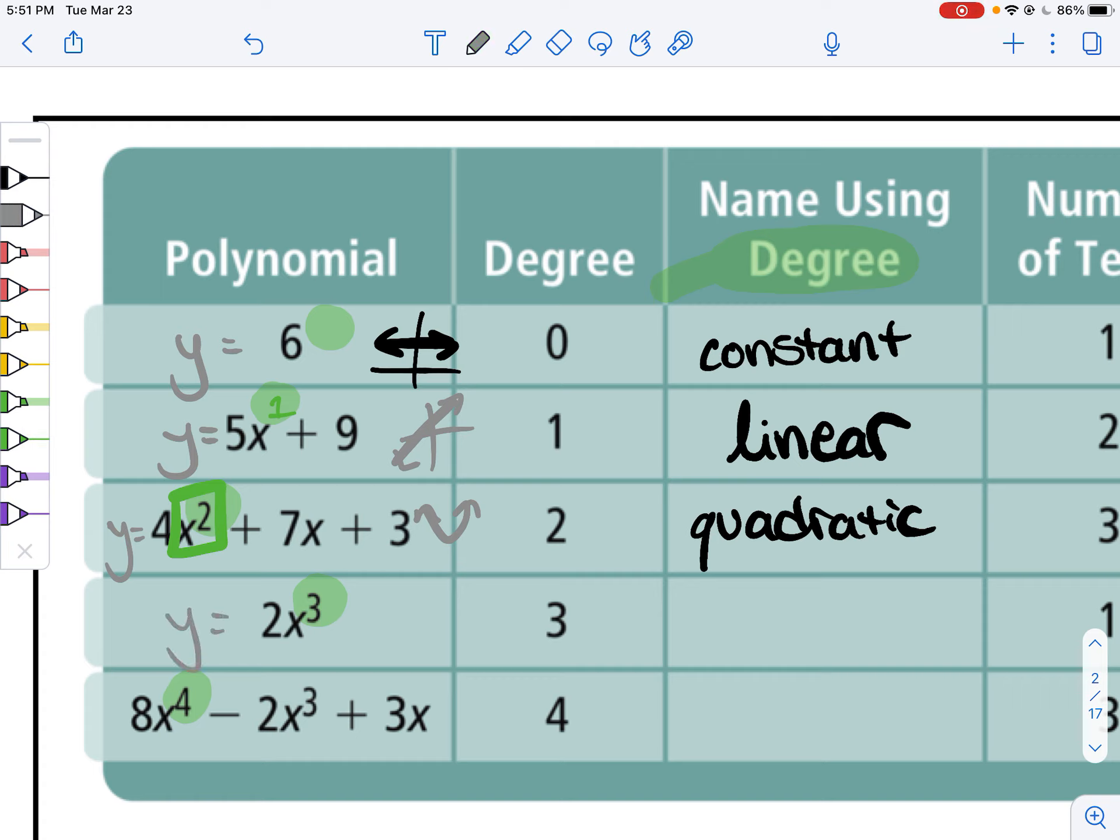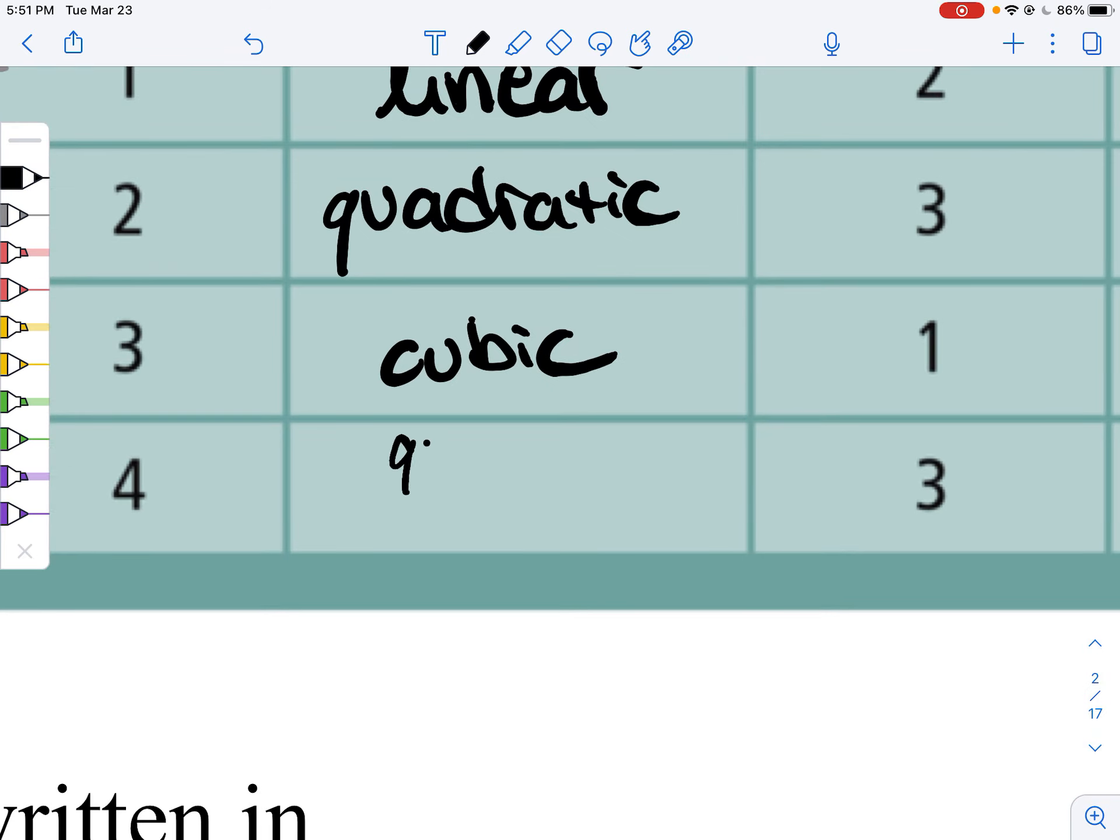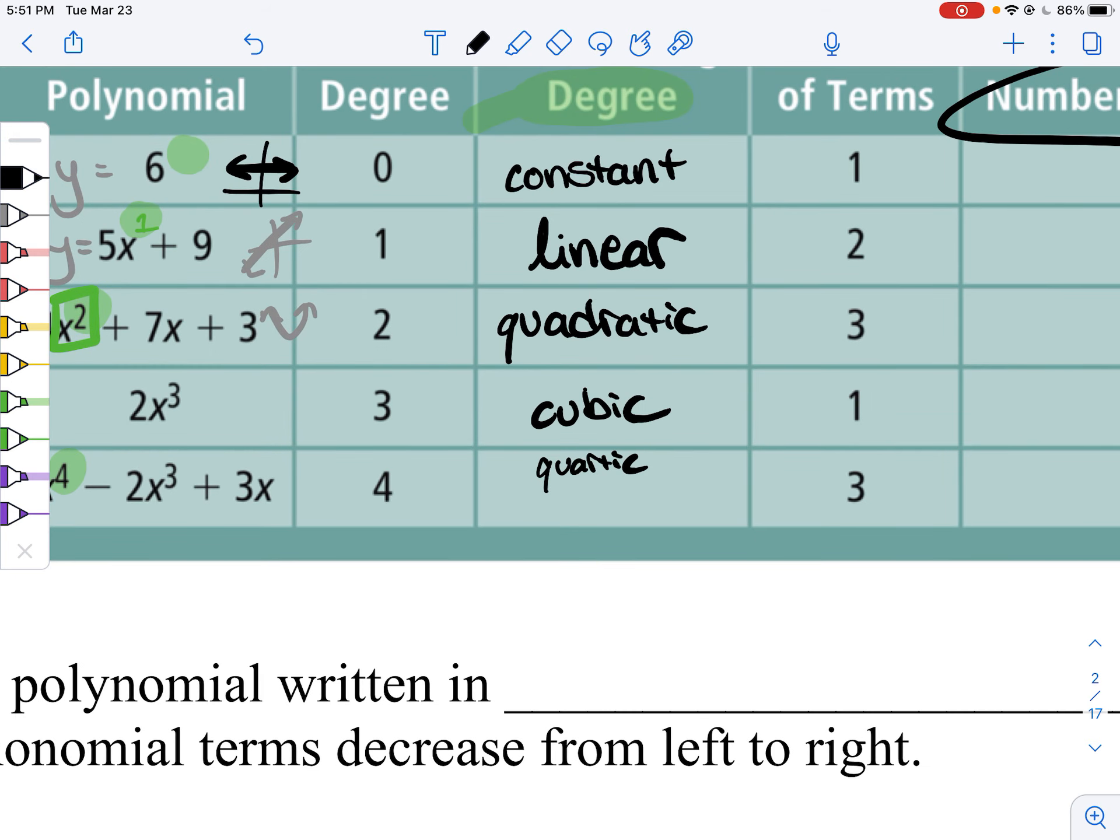x cubed, we call a cubic. x to the fourth, we call a quartic. Or you can really, for any of these guys, you can call them fourth degree, third degree, second degree, first degree. That's fine. Fifth is a quintic. And if you know your Latin, you can keep going. Or you can just say it's degree of five.